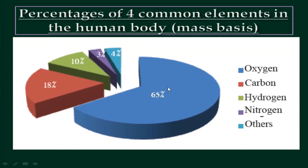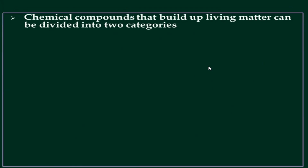You can observe this picture — this chart represents the percentage of elements contained in the living body. Oxygen is 65%, Carbon is 18%, Hydrogen is 10%, Nitrogen is 3%, and other elements make up 4%. By observing this, we can conclude that Oxygen is the most common element in the living body.